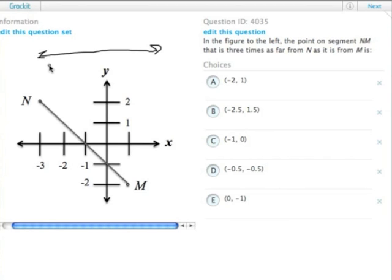In order for a point to be three times as far from one point as it is from another point, it basically needs to be three quarters of the way. So we can imagine a line divided into quarters.